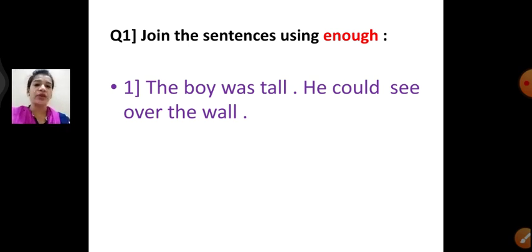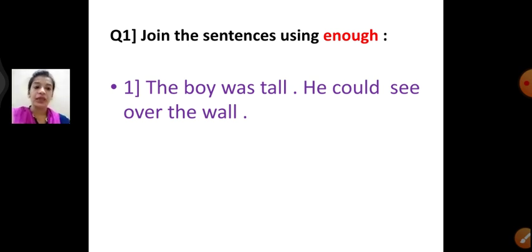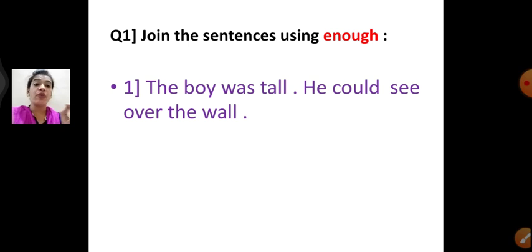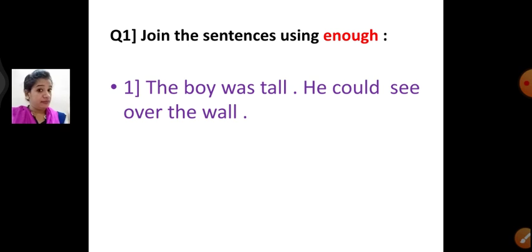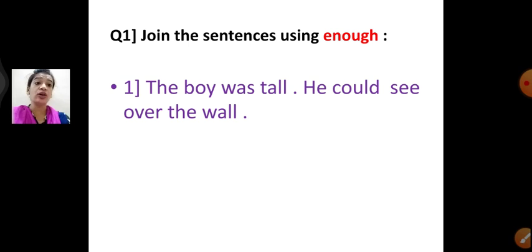For the first one: 'The boy was tall.' And the second sentence is 'He could see over the wall.' Now where we have to use the word 'enough'? So I will use: 'The boy was tall enough to see over the wall.' In the second statement, we remove 'he could' because we are already using 'the boy', and we replace 'could' with 'to'.